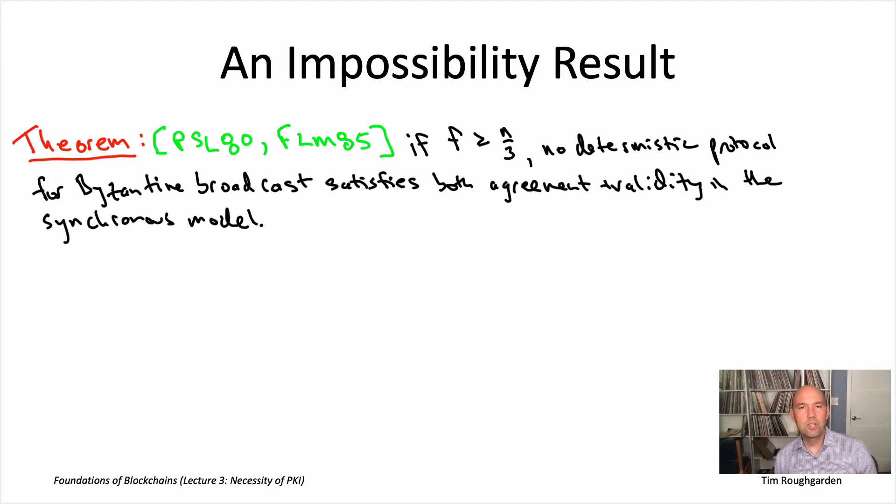All right, so that's the statement. If a third of the nodes or more are Byzantine, then you can't solve Byzantine broadcast in the synchronous model. Now, you see that and you should have a question, which is like, didn't we just in the last lecture actually give a protocol for Byzantine broadcast satisfying validity and agreement, no matter what f was? Wasn't that the whole point of the Dolev-Strong protocol? Yes, it is. So that's a good question.